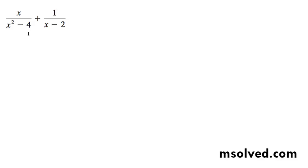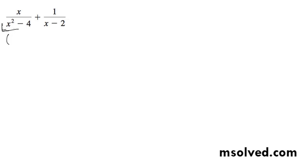Perform addition on the following problem. In order to do that we need to have a common denominator. If you factor out the denominator on this one, it's just (x+2)(x-2), and as a result that is the common denominator.